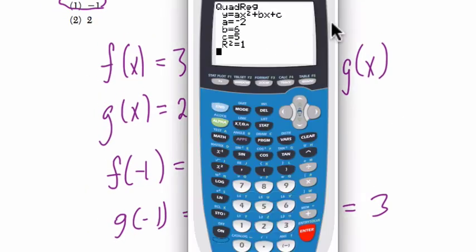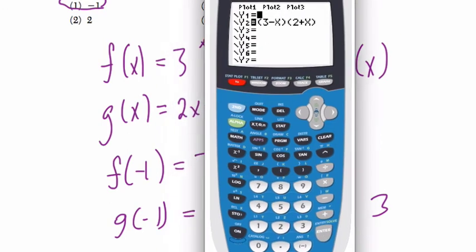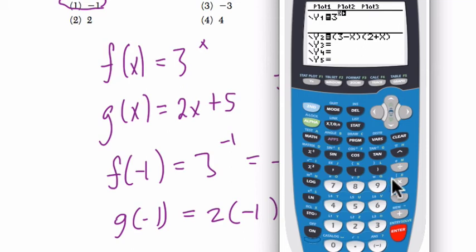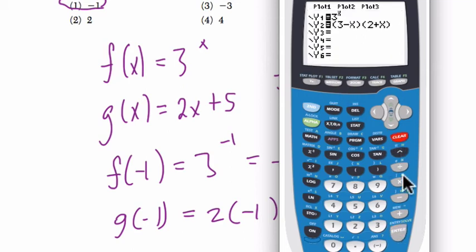If you get a more complicated situation on the calculator, go to your y equals button. And what I would do is enter in 3 to the x, and also the next one. Clear up any old equations that are there. 2x plus 5. Enter.